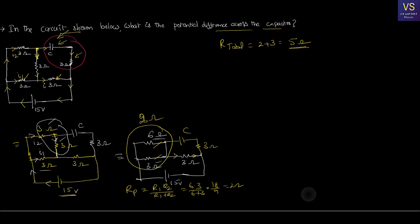I know the total resistance and the voltage, so I can calculate the current. I equals V divided by R. V is 15 volts, R_total is 5 ohms, so the total current is 3 amperes. This entire 3 amperes passes through the bottom 3 ohms resistor, and then it is shared across the parallel branches — the 3 ohms and the 6 ohms combination.